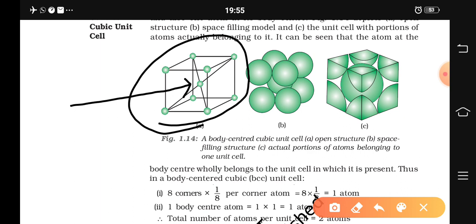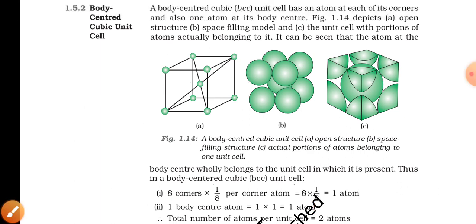The atom in the body center will not be shared with any adjacent unit cell. As a result, that particular body centered atom will wholly belong to that particular unit cell, as we can see from figure C. The contribution of a body centered atom to a particular unit cell is one — it wholly belongs to that unit cell and is not shared with any other adjacent unit cell in the crystal lattice.